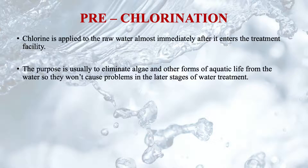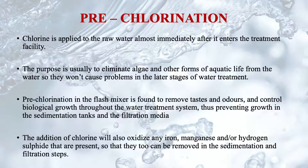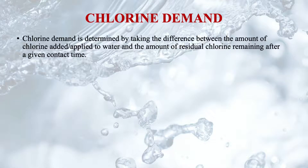Dechlorination is also carried out to remove excess chlorine from water. In pre-chlorination, chlorine is applied to raw water almost immediately after it enters the treatment plant. It helps eliminate algae and other forms of aquatic life from the water so they won't cause problems in later stages of treatment. Removal of taste and odour and control of biological growth take place throughout the water treatment system, preventing growth in sedimentation tanks and filtration media. The addition of chlorine will also oxidize any iron, manganese, or hydrogen sulfide present, so they can be removed in the sedimentation and filtration stages.